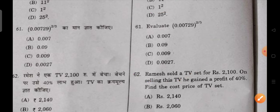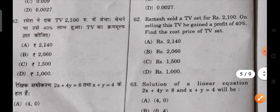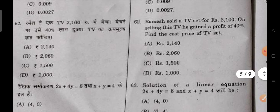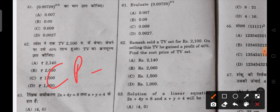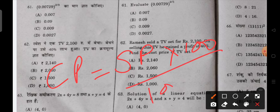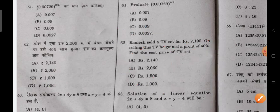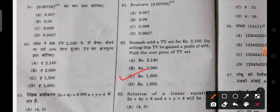Next, Ramesh sold a TV set for Rs. 2,100. On selling this TV he gained a profit of 40%. Find the cost price. The formula is cost price equals SP into 100 upon 100 plus profit percent. So SP is 2,100, profit is 40. When you solve it, the answer will be 1,500. C is the correct answer.